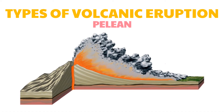Pelean eruption is associated with explosive outbursts that generate pyroclastic flows — dense mixtures of hot volcanic fragments and gas. The fluidized slurries produced by these eruptions are heavier than air but are of low viscosity and pour down valleys and slopes at great velocities.